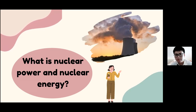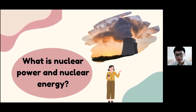Nuclear power can be obtained from nuclear fission, nuclear decay, and nuclear fusion reactions. Presently, the vast majority of electricity from nuclear power is produced by nuclear fission of uranium and plutonium in nuclear power plants. Nuclear energy is the energy released during nuclear fission or fusion, especially when used to generate electricity. The next slide will be presented by Stephanie.